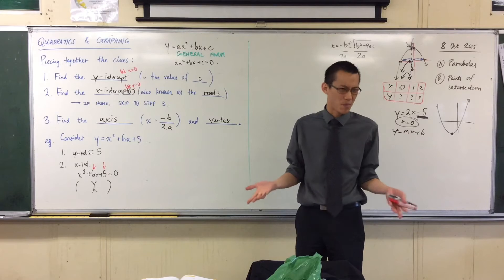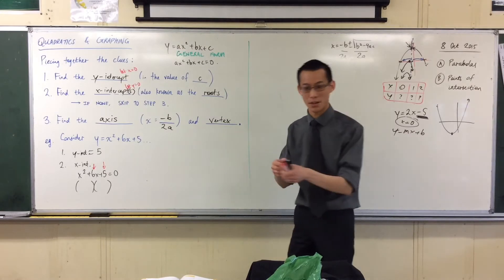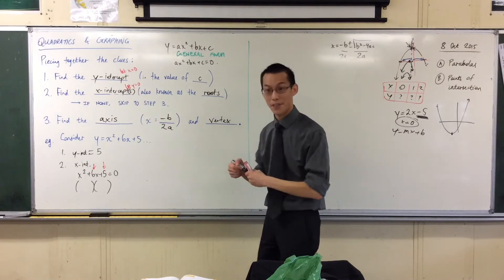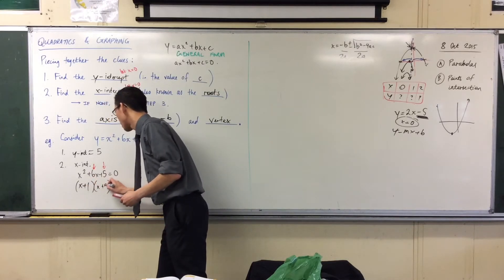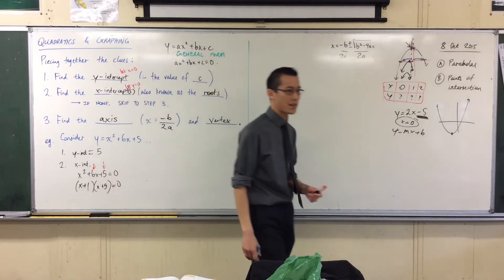I want two numbers that add to six, multiply to five. What am I going to choose? Five and one. In fact, five is prime. So one and five are pretty much all I'm going to have, unless there's thirds. Thankfully, there aren't. So one and five is what you told me, so that's what I'm going to stick in to my factorization.